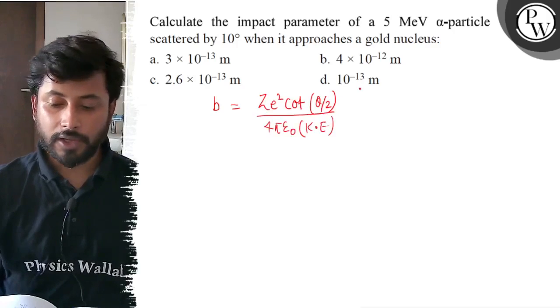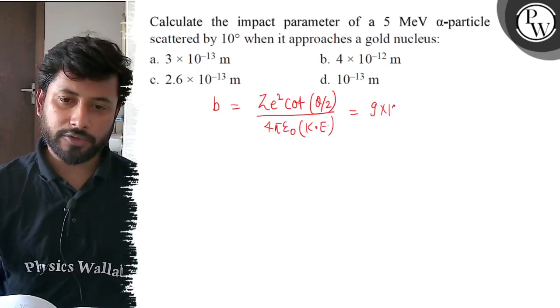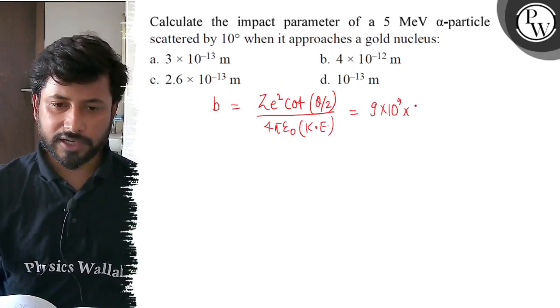Okay, now let us put values here. 1 by 4 pi epsilon naught is 9 into 10 to the power 9. Z is here for gold nucleus, Z is 79.